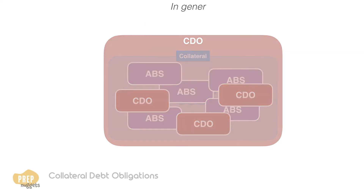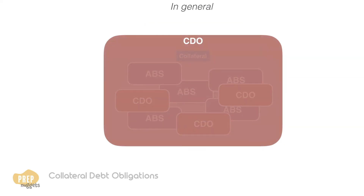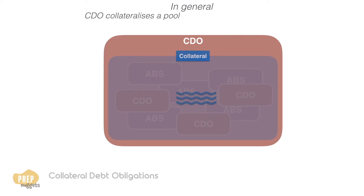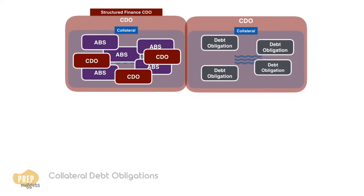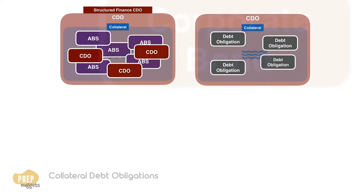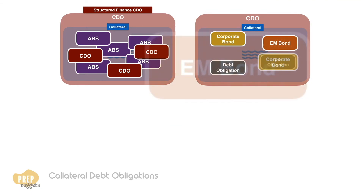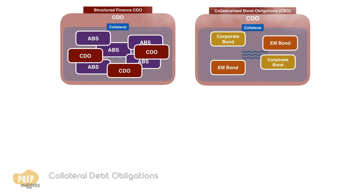In general, a CDO is used to collateralize a pool of any form of debt obligation. When the pool is made up of corporate and emerging market bonds, they are known as collateralized bond obligations.